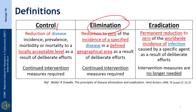Whereas elimination is the reduction to zero of the incidence of a specified disease in a defined geographical area as a result of deliberate efforts. The eradication of a disease is a permanent reduction to zero of the worldwide incidence of infection caused by a specific agent as a result of deliberate efforts. For control and elimination, continued intervention measures are required over a period of time, but for eradication the intervention measures are no longer needed.